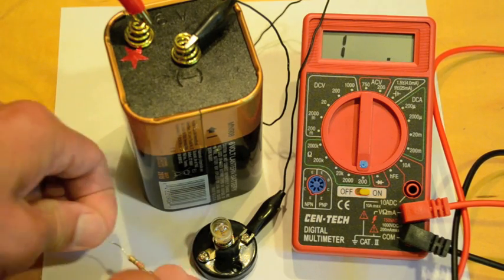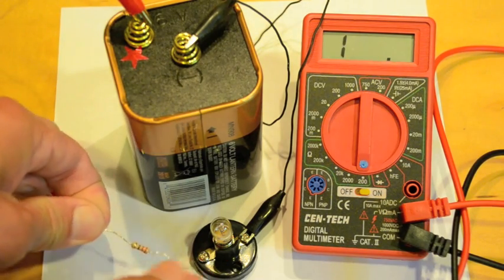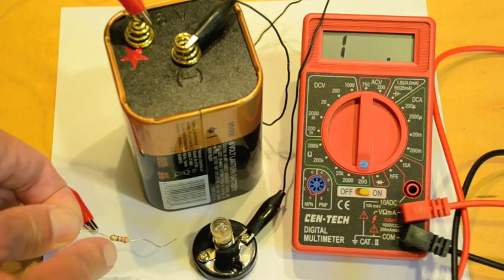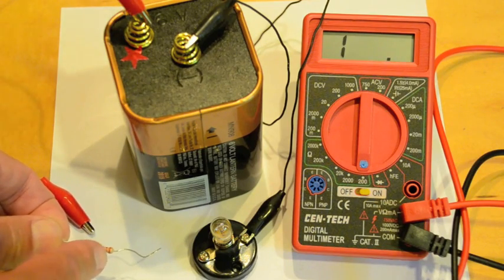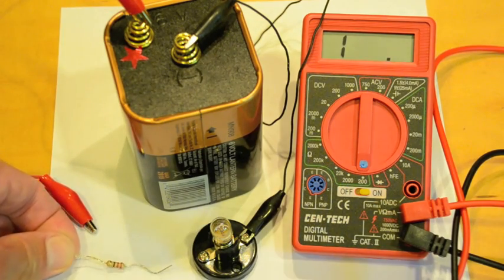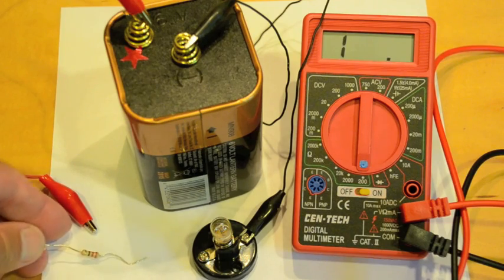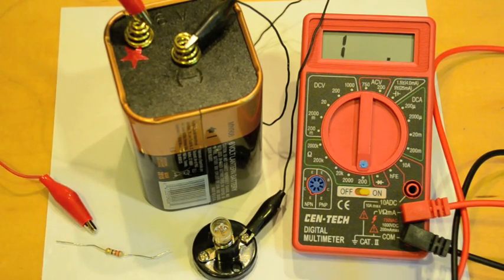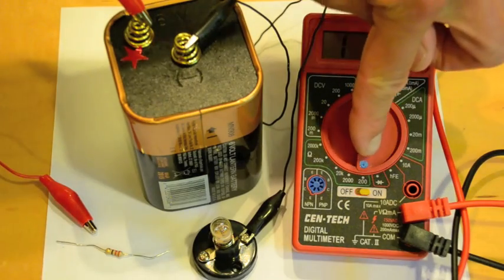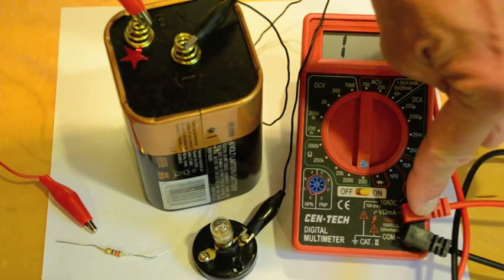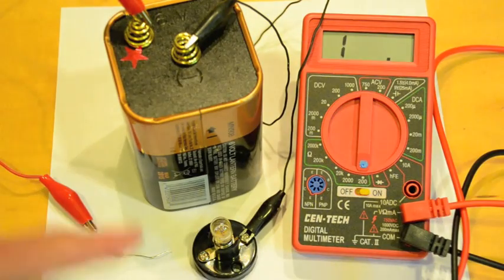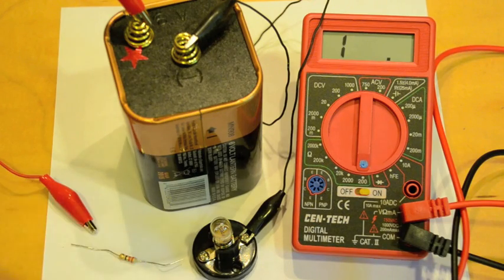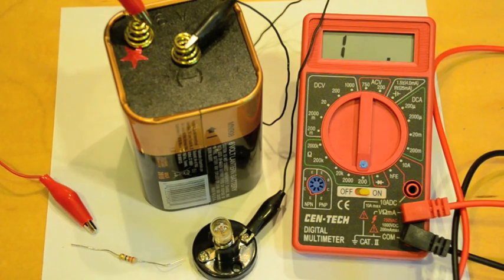And there's a little color code on the resistor and I believe that says it's a 22 ohm resistor so the meter pretty much agrees with the color coding on the resistor and we've learned to set the dial correctly to measure ohms, to plug in the wires correctly, and to disconnect the device from the circuit in order to measure it. Those are the three keys to using an ohmmeter.